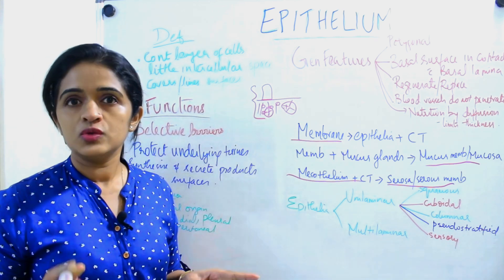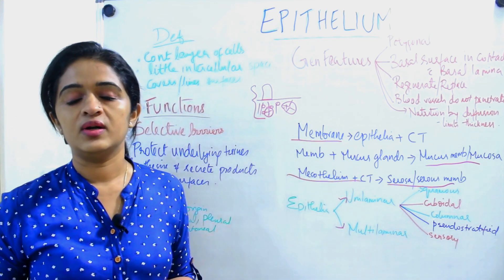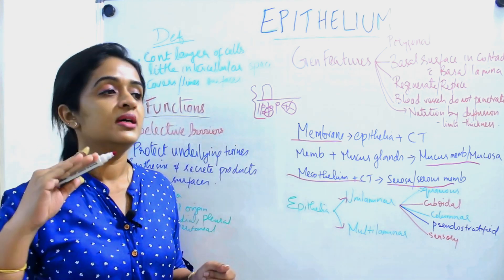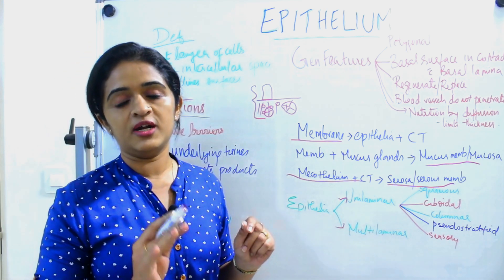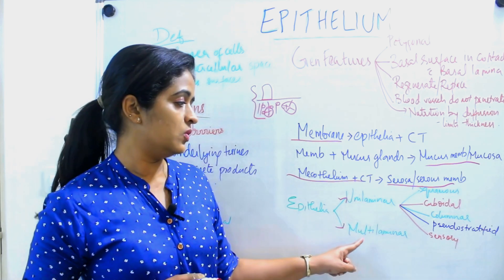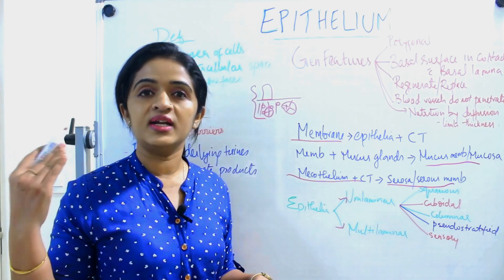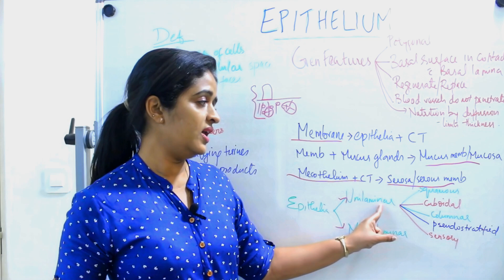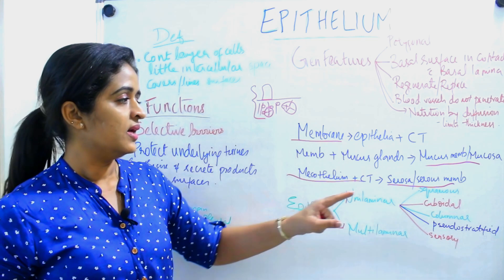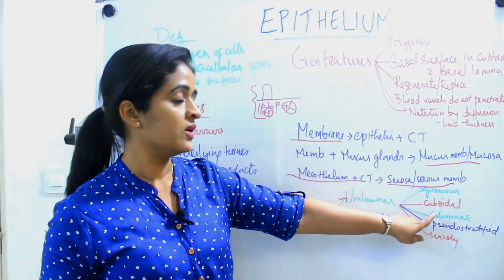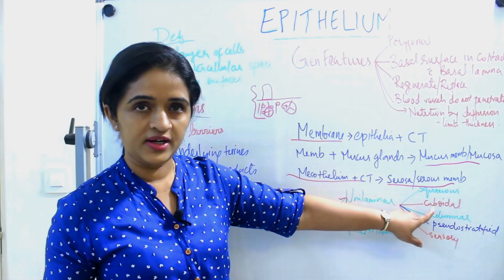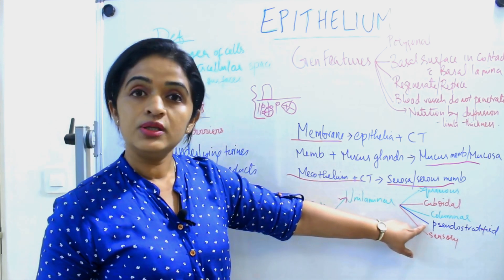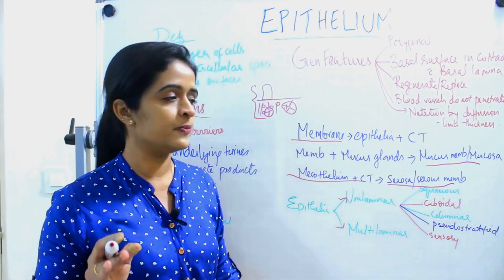Now let's divide epithelium broadly into two categories: one is known as unilaminar and the other is known as multilaminar. We classify them depending upon the number of layers. Unilaminar means made up of a single layer of cells; multilaminar means more than one layer of cells. Unilaminar is further classified based on the shape of the cells: you have squamous epithelium (flattened cells), cuboidal epithelium (cuboidal-shaped cells), and columnar epithelium (where the height of the cell is more than the breadth).